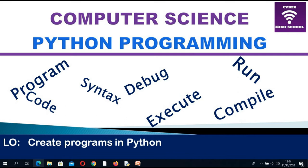Python is a high-level computer programming language. There are two types of levels: low-level languages and high-level languages. In low-level languages we have machine language, which is in the form of binary — zeros and ones — and also assembly language. High-level languages include Java, C+, Python, BASIC, and many others.